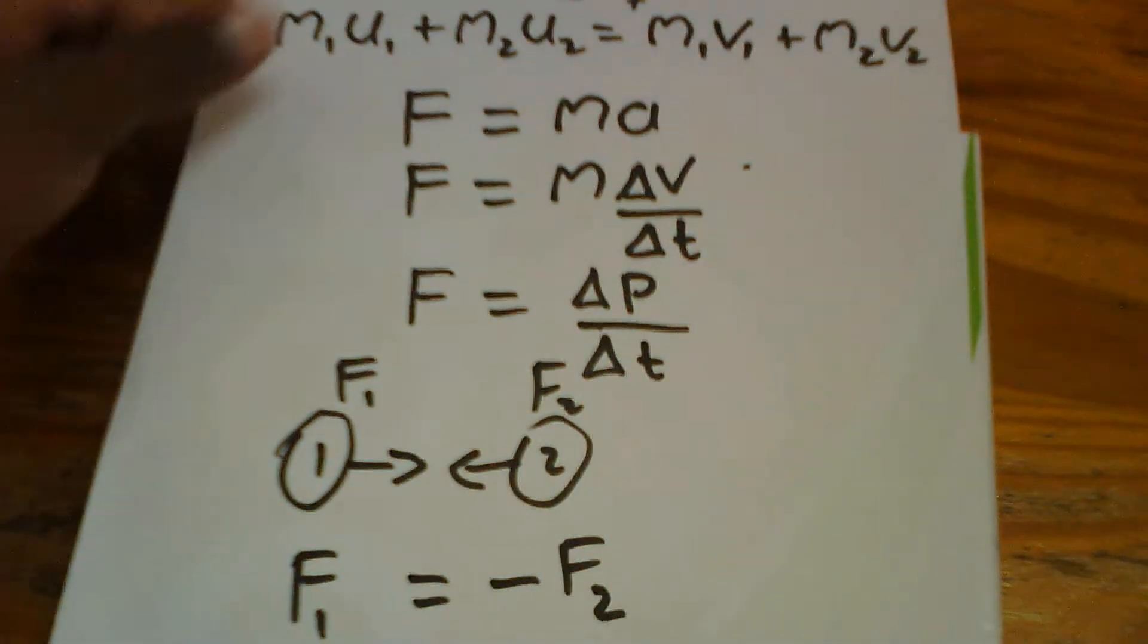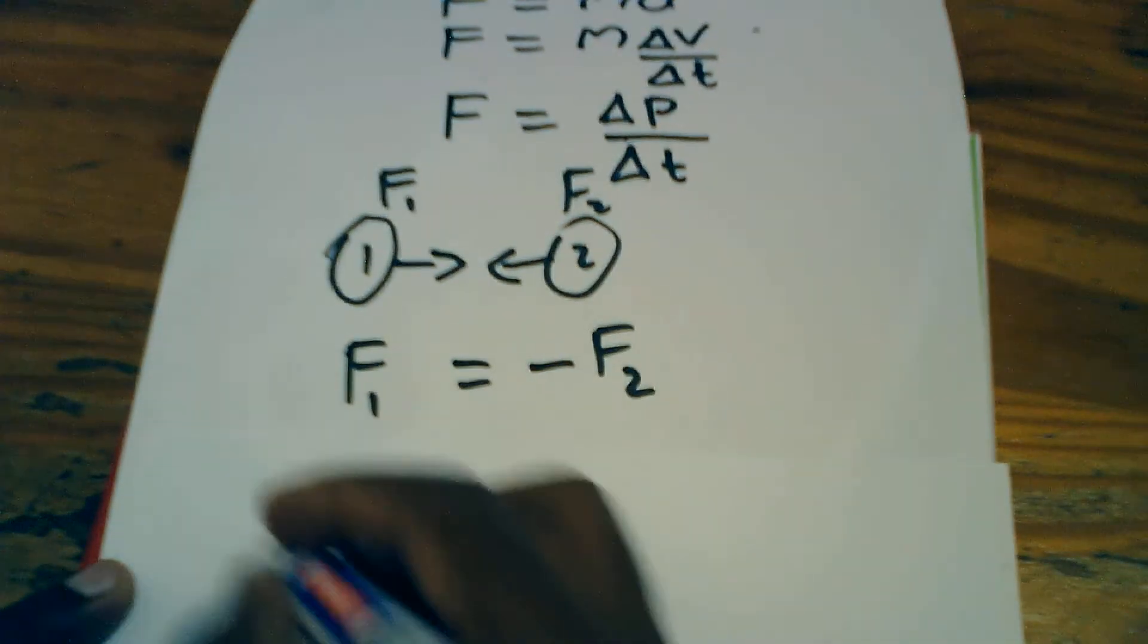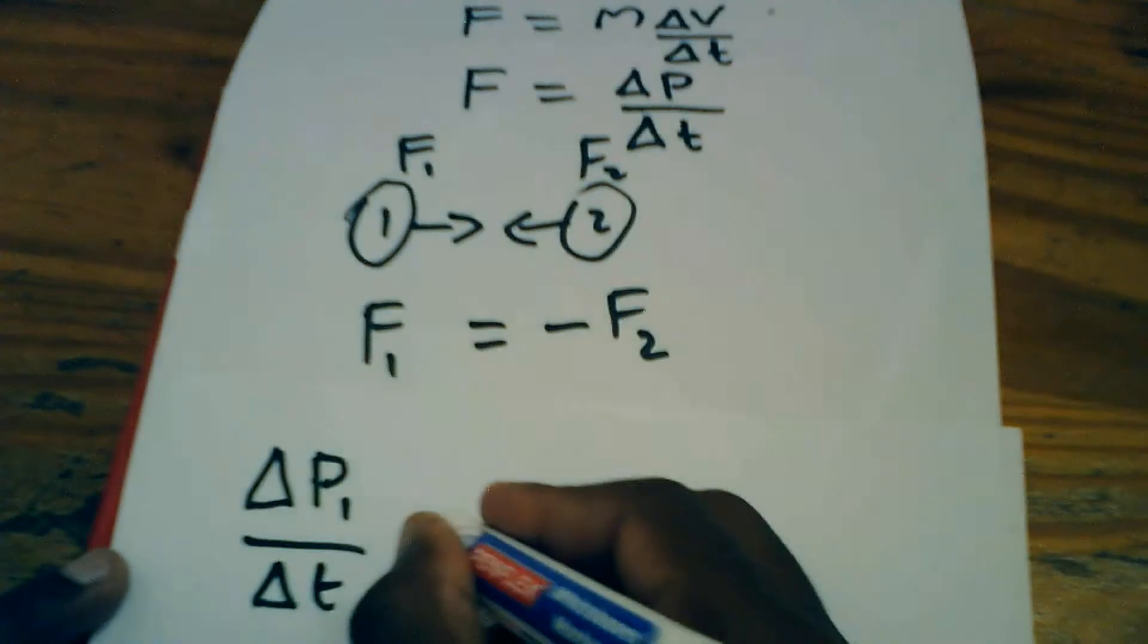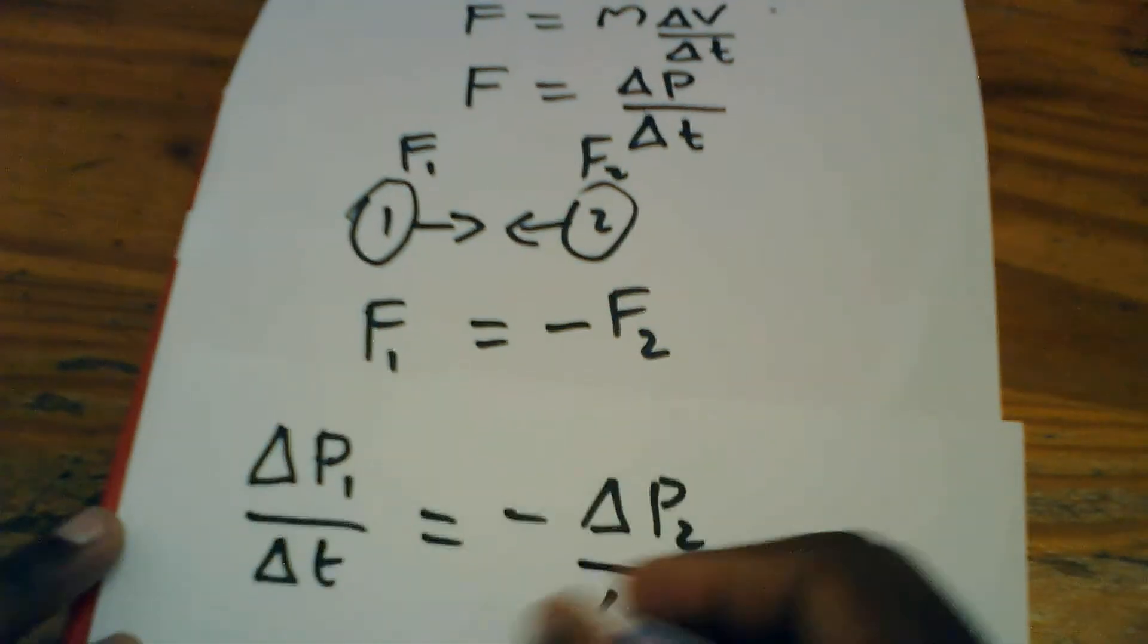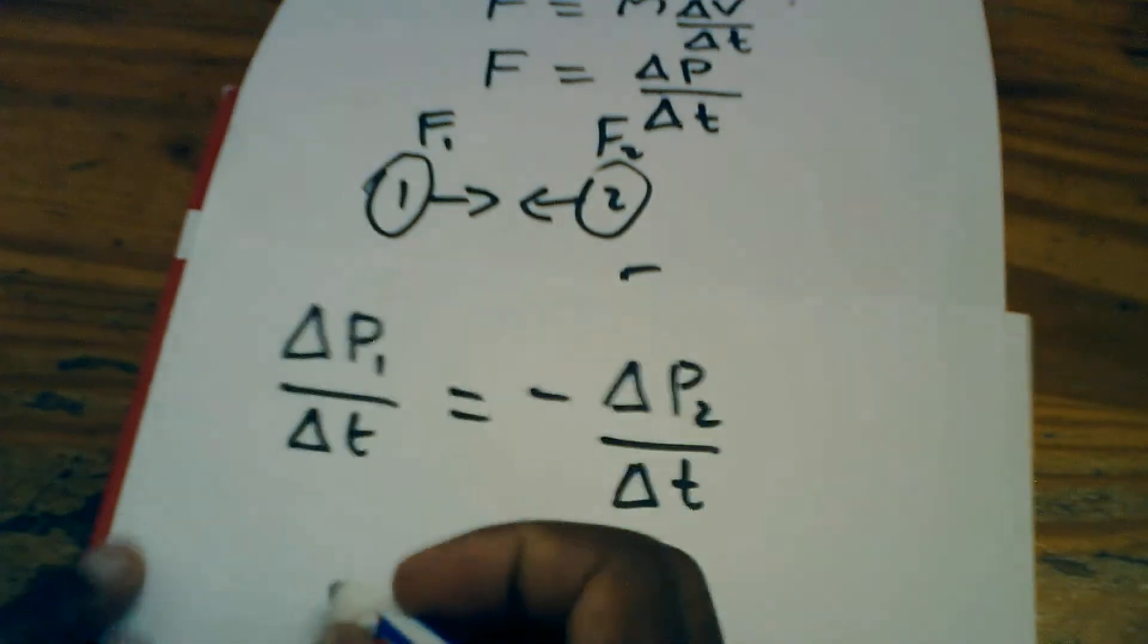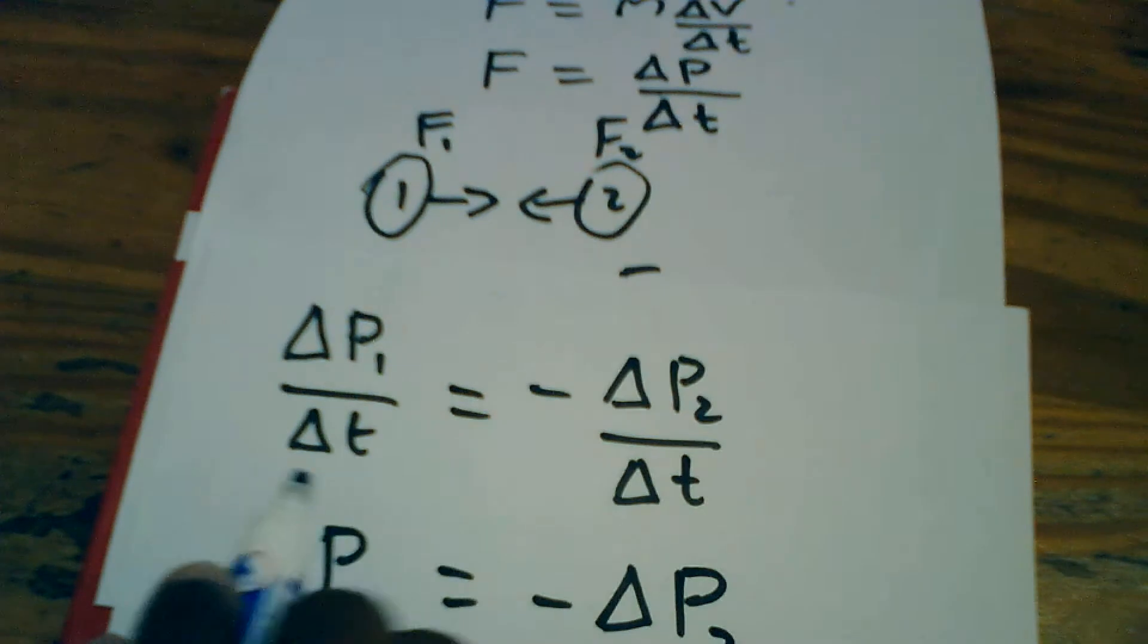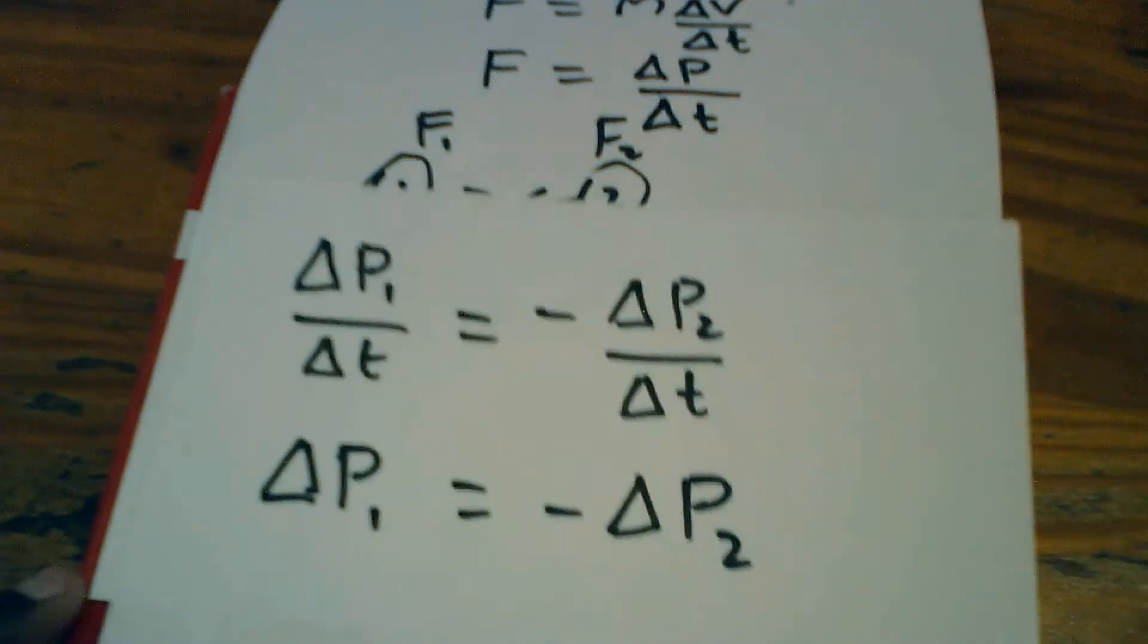Now, going back to Newton's second law, we know that the force is the rate of change of momentum. So this means that F1 is going to be delta P1 all over delta T and F2 will be delta P2 all over delta T. If we multiply both sides of this equation by delta T, we're going to get that delta P1 equals negative delta P2. Why? Because delta T is going to cancel out if we multiply both sides of these equations by delta T.